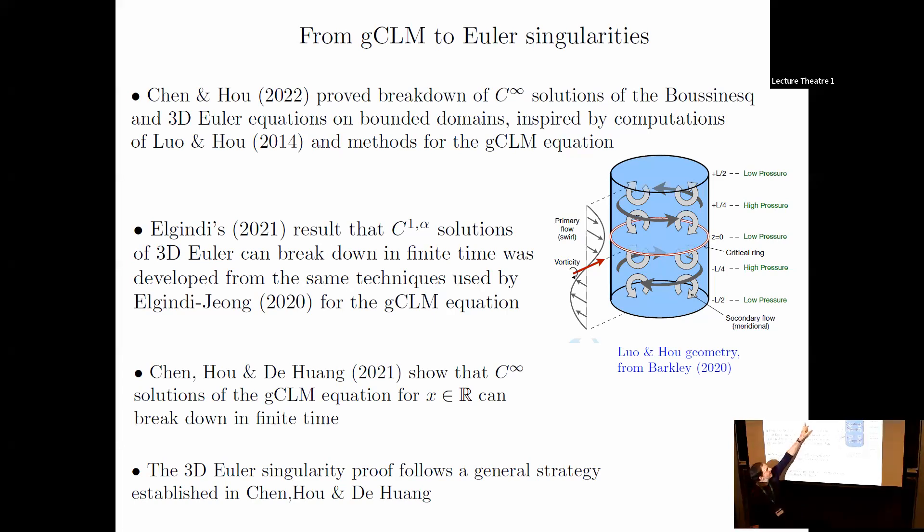This proof directly uses methods developed for the GCLM equation. That's why I'd argue this has been influential. Moreover, Elgindi has an important result that smooth but not C-infinity solutions of 3D Euler break down, developed from the same techniques Elgindi and Jeong used for GCLM. Earlier, Chen, Hou, and Huang showed that C-infinity solutions of GCLM on the real line break down in finite time for special cases. In their 3D Euler proof, they followed the general strategy established for GCLM.